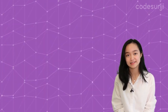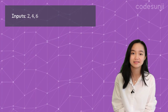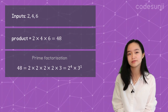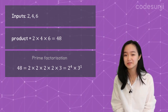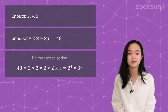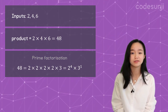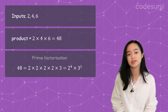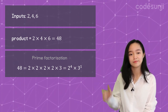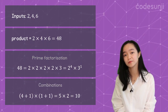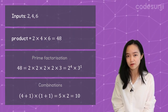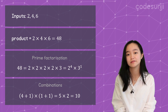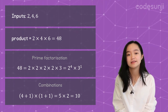We can see this more clearly in the case where the inputs are 2, 4, and 6, whose product is 48. The prime factorization of 48 is 2 × 2 × 2 × 2 × 3, so 2 appears 4 times and 3 appears once. We have five choices for the exponent of 2 (0, 1, 2, 3, and 4) and two choices for the exponent of 3 (0 and 1), so the number of combinations is (4+1) × (1+1) = 5 × 2 = 10.